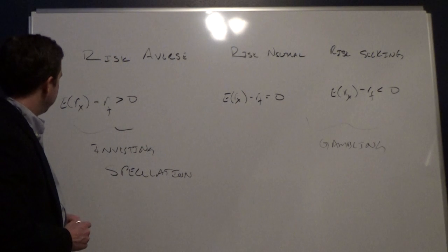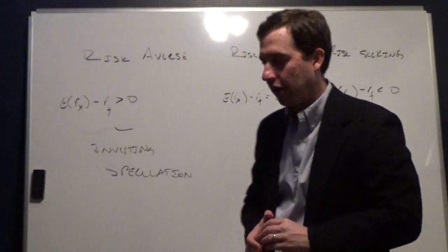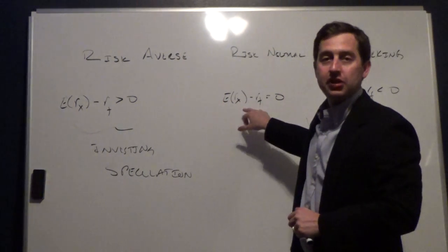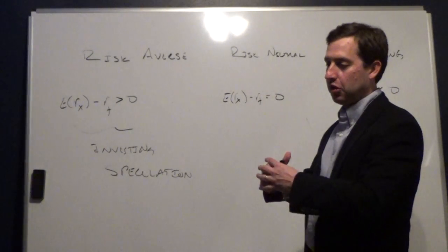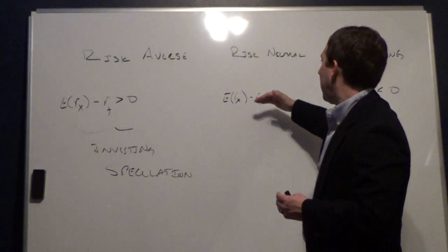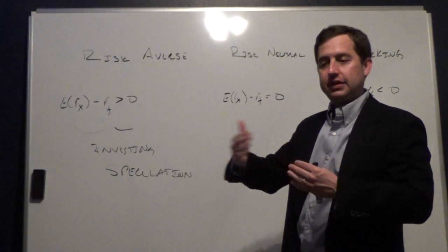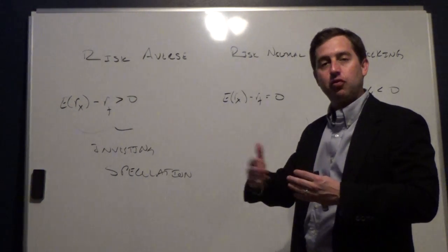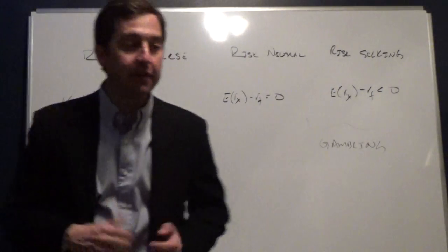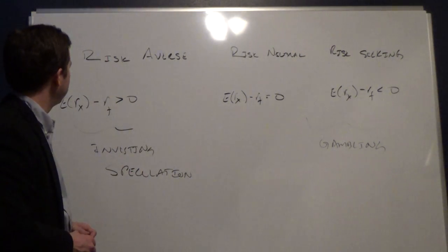A risk-averse investor takes on risk only for a higher expected return. One thing to mention: in academic finance, we will often assume investors are risk neutral. We do that only because it makes calculations simpler, and the fact that investors are indifferent to risk doesn't affect certain results. So sometimes you will see the assumption of risk-neutral investors in finance — that's just a convenience. For this course, we are definitely assuming investors are risk averse.